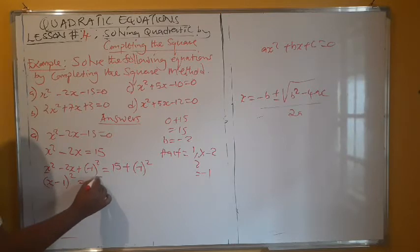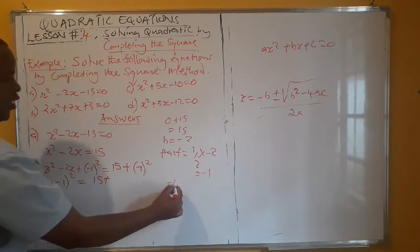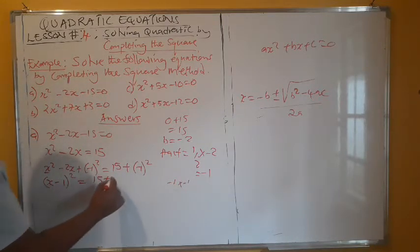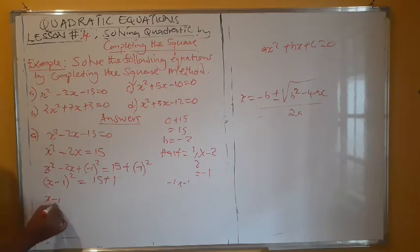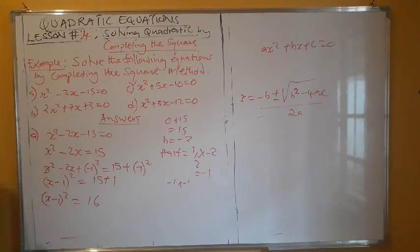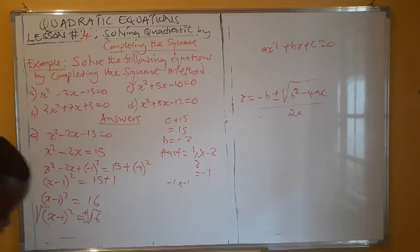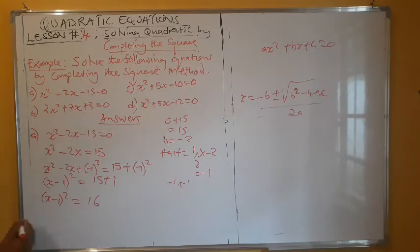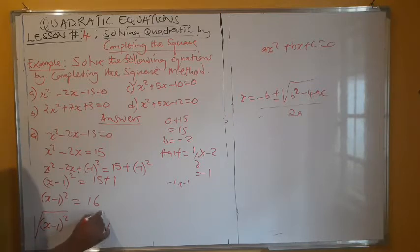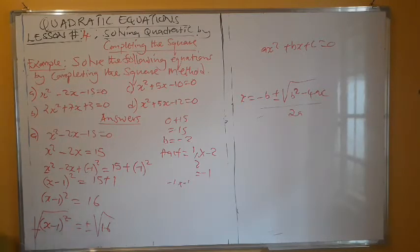So on the right-hand side we have 15 plus negative 1 squared. Negative 1 squared means negative 1 times negative 1, which gives 1. So now we have x minus 1 to the power 2 equals 16. To get rid of the power, we introduce a square root on both sides — and here it will be plus or minus. The square and the root cancel on the left side.